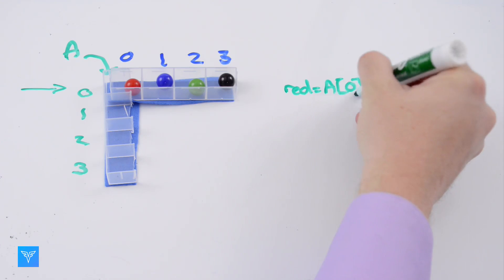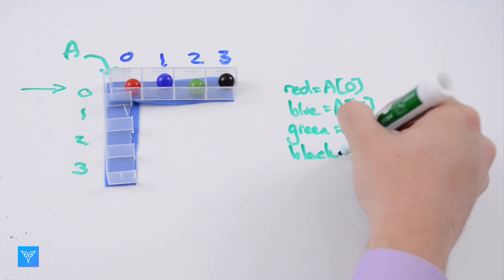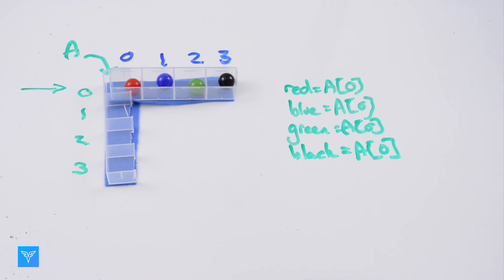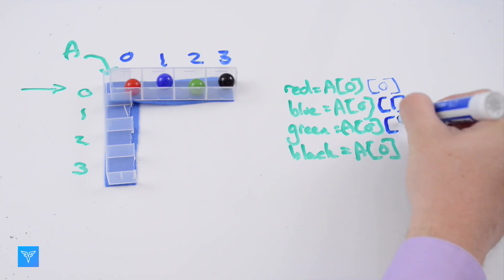How would we write this? Each marble lives in A0, but in a different position of A0. So the red marble is in position 0 of A0, the blue marble in position 1 of A0, with the green and black in positions 2 and 3 of A0.